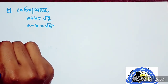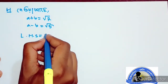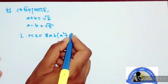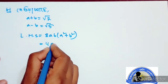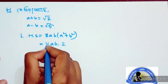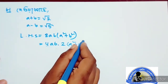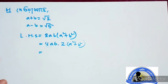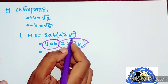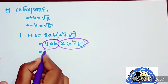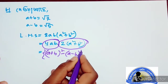So we have 8ab into a squared plus b squared on the left side. We can simplify this to 4ab into a squared plus b squared, and further to 2ab into a squared plus b squared minus a squared plus b squared.